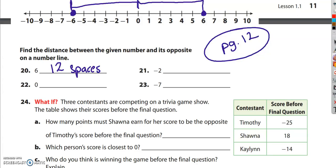The next one, the distance between negative 2 and its opposite. Well, the opposite of negative 2 is positive 2 and the distance is 1, 2, 3, 4. It's a total of 4 spaces.